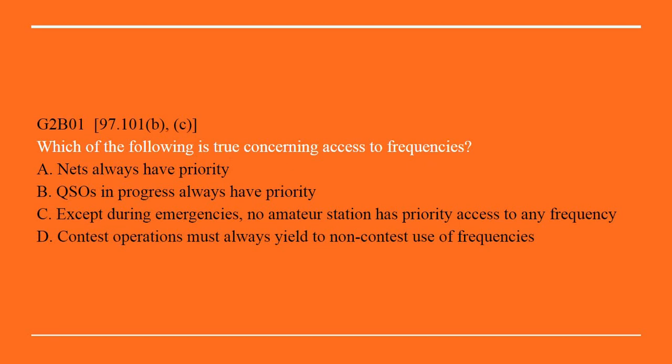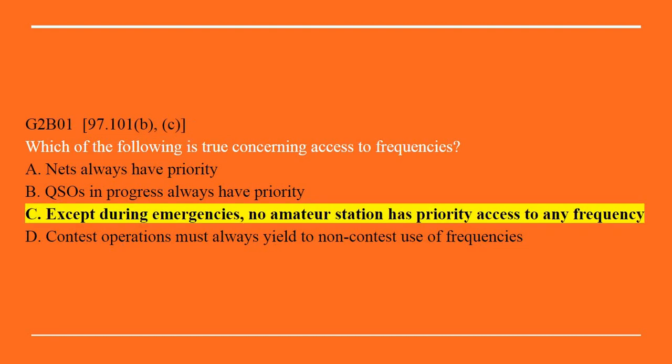G2B01: Which of the following is true concerning access to frequencies? A. Nets always have priority. B. QSOs in progress always have priority. C. Except during emergencies, no amateur station has priority access to any frequency. Or D. Contest operations must always yield to non-contest use of frequencies. The answer is C: Except during emergencies, no amateur station has priority access to any frequency.